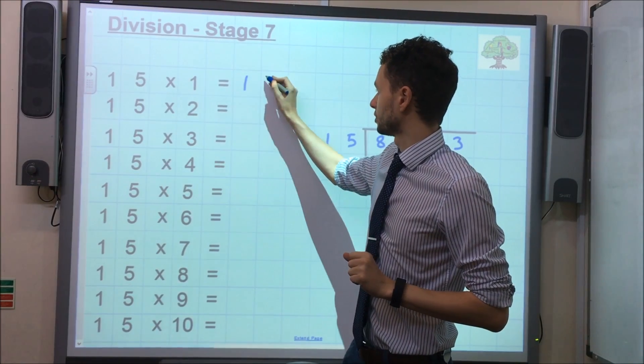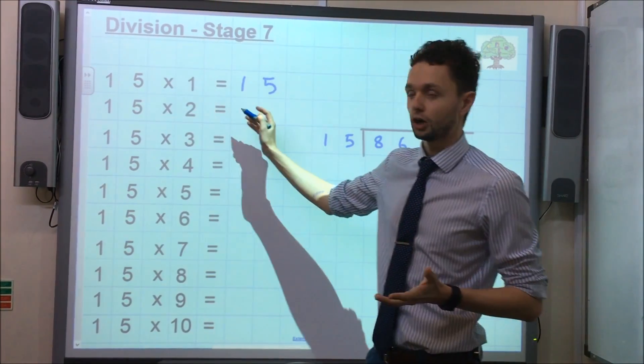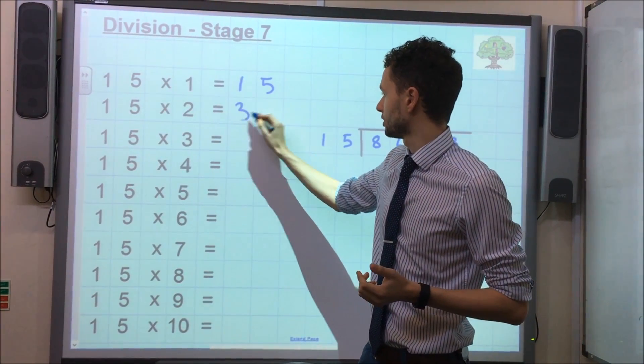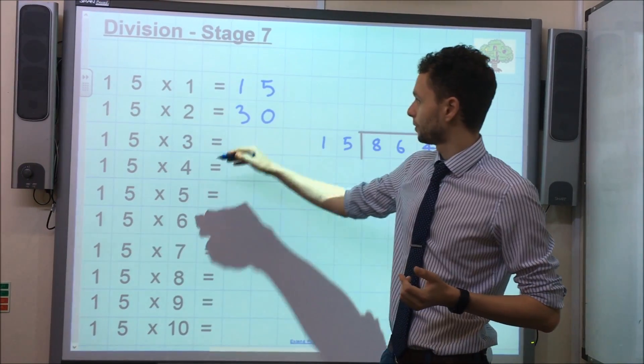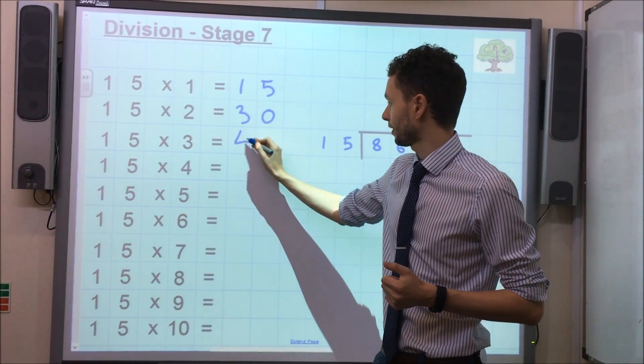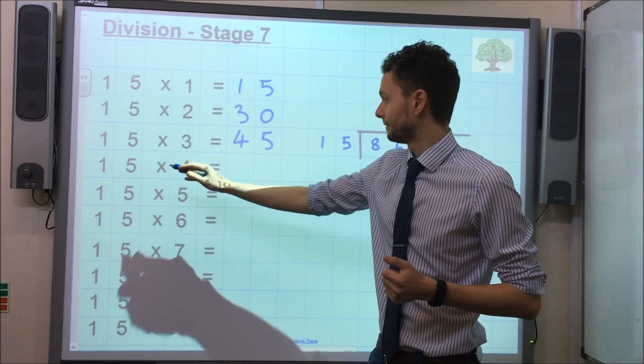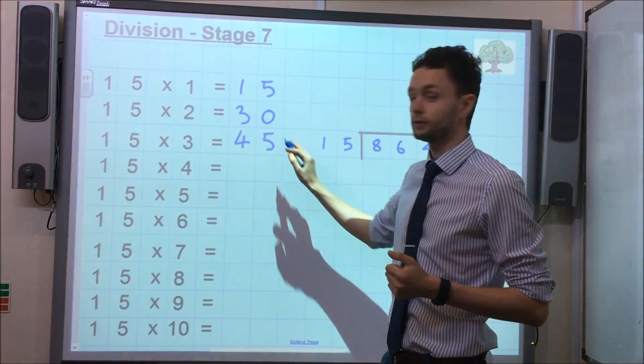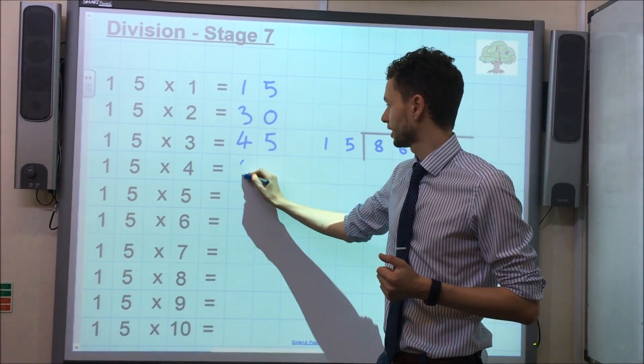15 times by 1 is obviously 15. 15 times by 2, we just double that, which is 30. 15 times by 3, we just add these two together, which is 45. 15 times by 4, we just double 15 times by 2, double 30, which is 60.